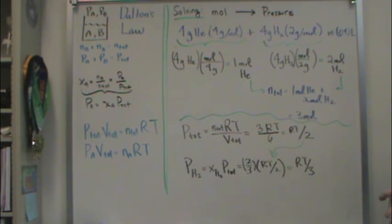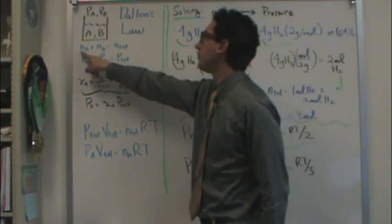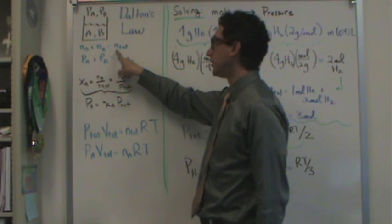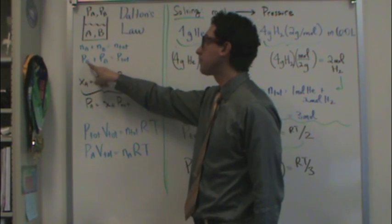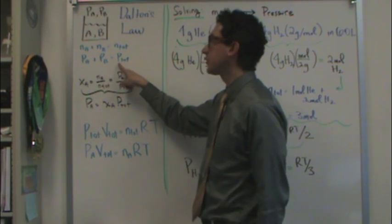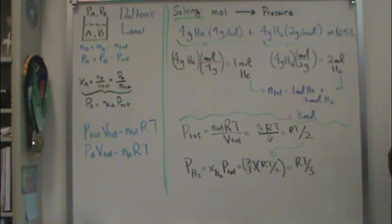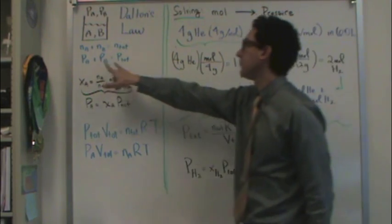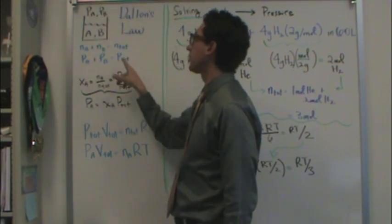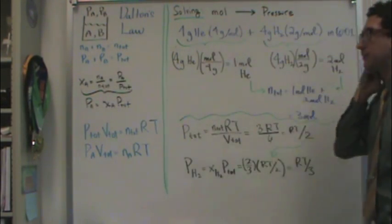So we can actually say two things that are hopefully pretty intuitive. The sum of the moles of A and B equal the total moles, and the sum of the pressure of A and B equal the total pressure. And when we say pressure of A, I really mean the partial pressure of A or the pressure contribution by A, and B is the partial pressure of B. So if you sum up both of these, you get the total pressure above the liquid level.